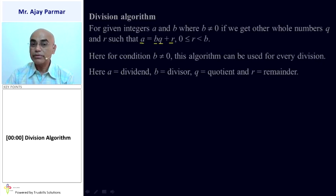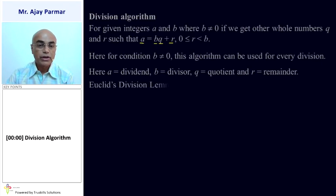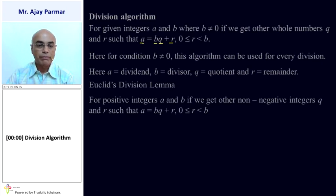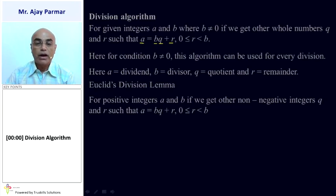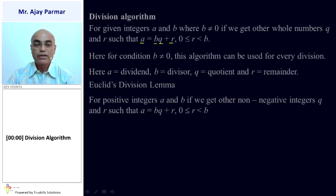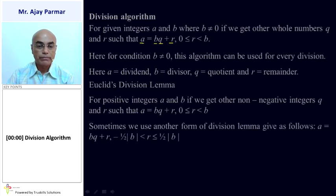A is the dividend, B is the divisor, Q is the quotient, and R is the remainder. Now, Euclid's division lemma: for every positive integers A and B, if we get other non-negative integers Q and R such that A is equal to BQ plus R, where zero is less than or equal to R, which is less than B.